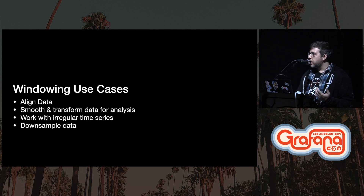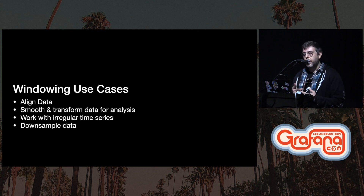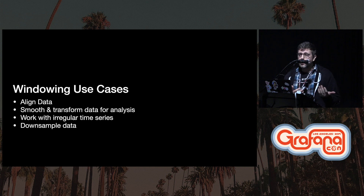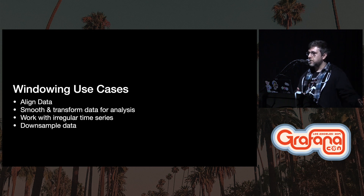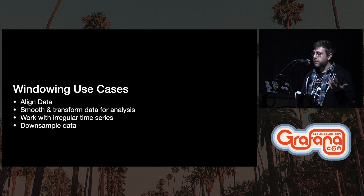Windowing is really useful for aligning data. Not every metric has the same timestamp. If you want to do math across measurements or do computations or compare values most efficiently, aligning the data can be helpful. It'll let you smooth and transform data for analysis when combined with selectors or aggregates. It's really good for working with irregular time series, transferring data that's coming in sporadically into data represented periodically. And it's also really useful for downsampling — time series data is generally more valuable at higher resolutions the more recent it is. Using the window function, we could take windows of an hour-long period and transform 15-second metrics into something for long-term storage to save on space.